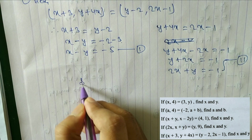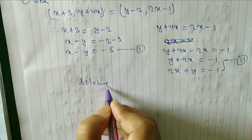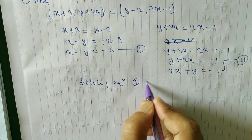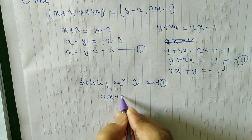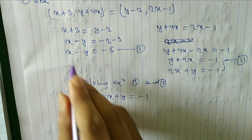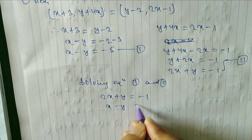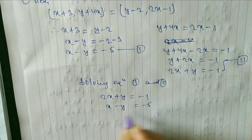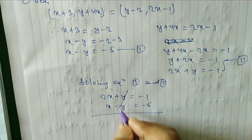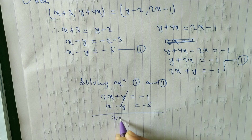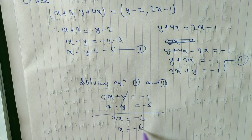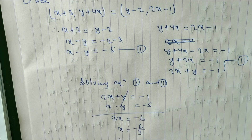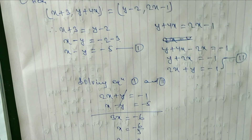Solving equations 1 and 2: adding x minus y is equal to minus 5 and 2x plus y is equal to minus 1, the y terms cancel, giving 3x is equal to minus 6, so x is equal to minus 2.